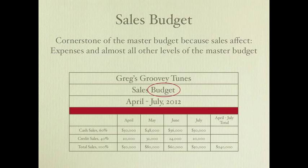You want to keep cash and credit sales separate because of when they're collected. Cash sales are collected when the sale is made. Credit sales, on the other hand, can be collected one, two, three or more months after the sale. So when we get into our cash budget, we need to know what percent of sales are on credit and when we anticipate collecting them — for example, 10% the following month and 30% the second month.